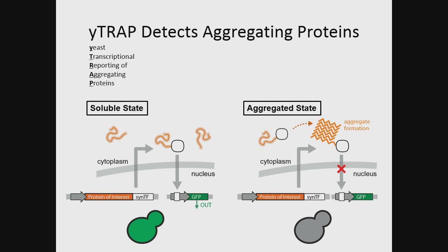The Y-TRAP sensor is composed of two gene expression cassettes, which we integrate into yeast with a single plasmid. The first cassette is where we tag our protein of interest with a synthetic transcriptional activator. The second cassette is a promoter that recognizes that specific transcriptional activator and gives you the output, which can be programmed to be anything you want — I've used fluorescent proteins and LacZ, but for most of this talk I'm using GFP.